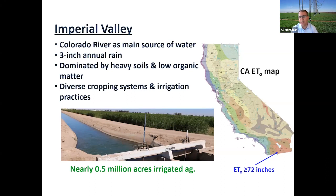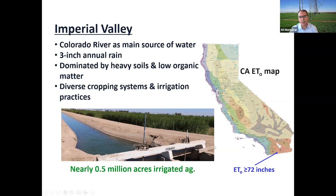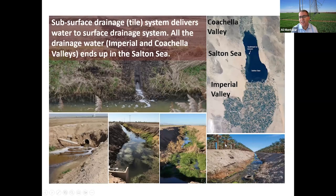The region is dominated by heavy soil and low organic matter, which means a lot of fertilizer is applied by growers. We have nearly half a million acres of irrigated agriculture — one of the most productive ag regions in California. When it comes to evapotranspiration, we have the highest reference ET in the state, meaning the highest crop water requirements and irrigation application rate. We have a very well-developed drainage system with tile systems and surface drainage canals that take all the water from Imperial Valley and Coachella Valley to the Salton Sea.